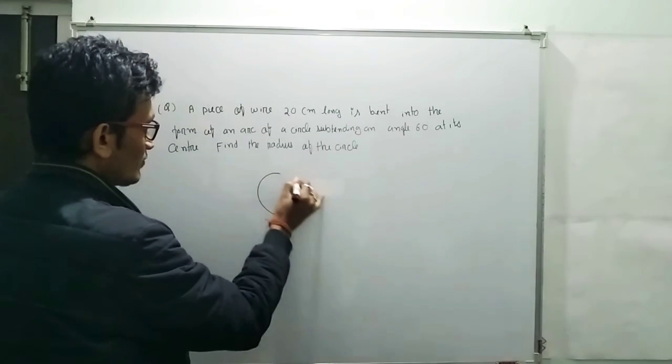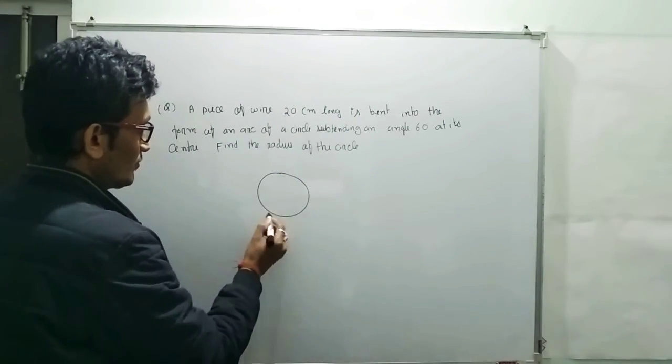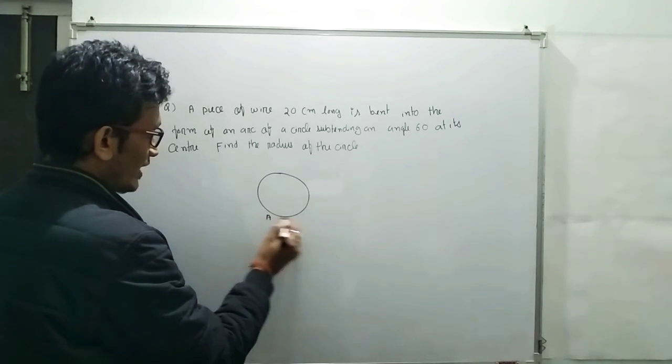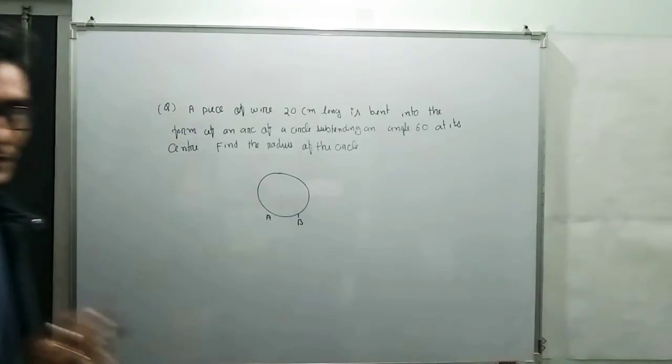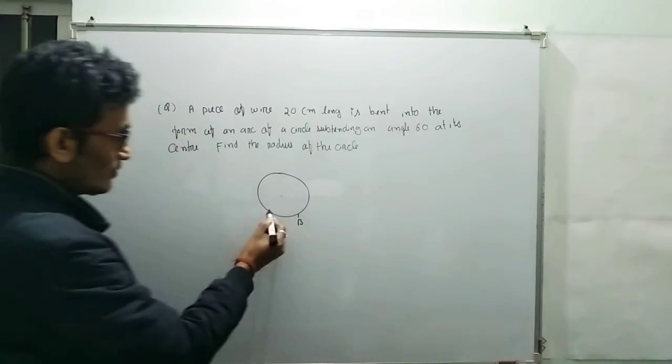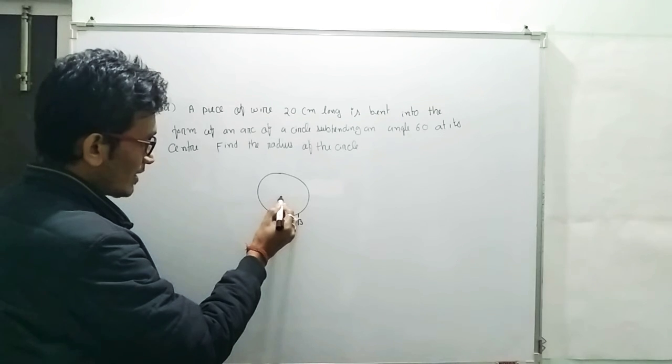First of all we will discuss one important point. Suppose the arc AB, this is the arc. Arc means it's a part of a circle. Suppose this arc AB subtends an angle